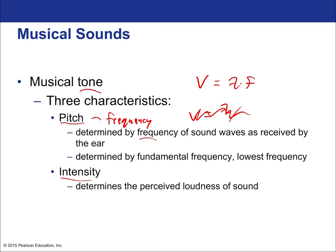The frequency received by the ear is determined by the fundamental frequency — the lowest frequency — because many musical tones are composed of multiple frequencies. They are not a single frequency; in fact, single frequencies don't necessarily sound pleasant. But when you do have a group of frequencies together that make a tone, it is the lowest one that is going to kind of set that tone.